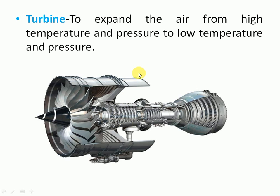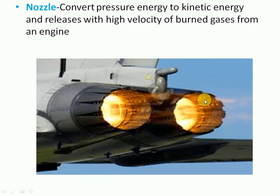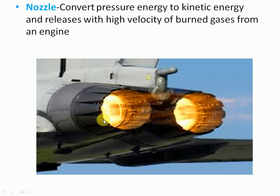The turbine is used because after combustion the high-pressure gases expand. The turbine expands the air to low pressure. Next, the nozzle — the nozzle is just opposite to the diffuser. It is used to convert pressure energy into kinetic energy, releasing burned gases from the engine at high velocity. The burned gases after combustion are released from the nozzle at high velocity — that's why we use a nozzle in the turbo propeller engine.